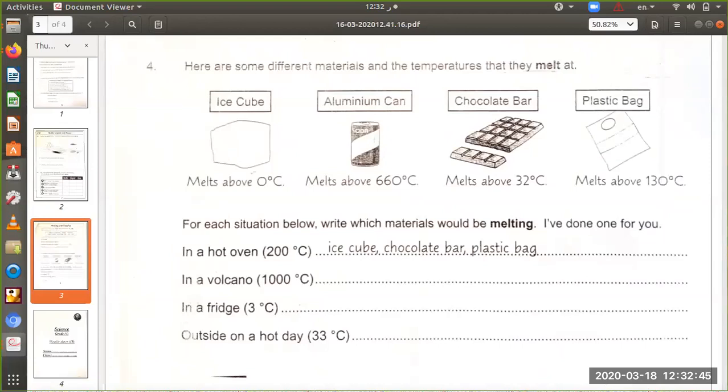The next question: here are some different materials and the temperatures that they melt at. For each situation below, write which materials would be melting. In a volcano, 1000 degrees Celsius, all of them will melt - the ice cube, the aluminum can, chocolate bar, and the plastic bag.